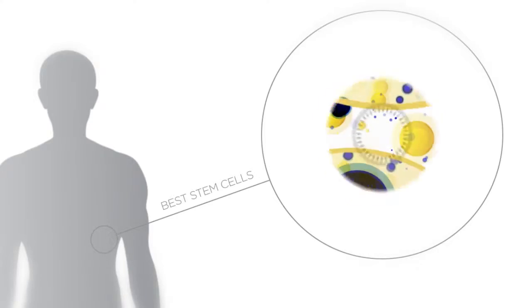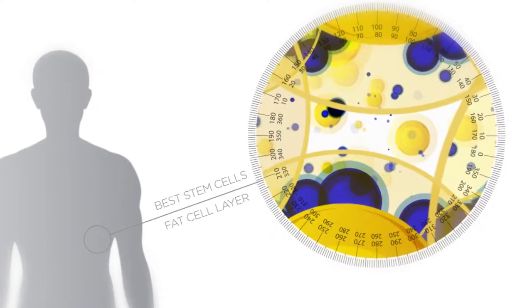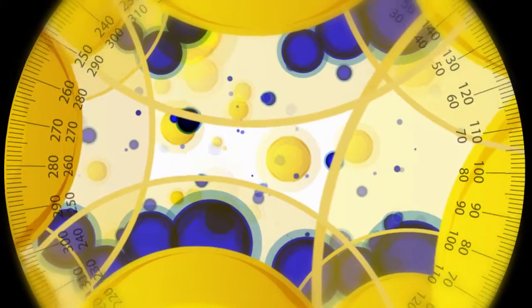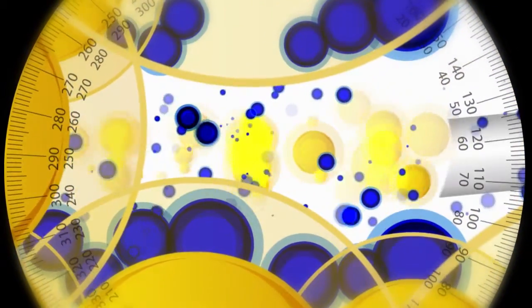The process begins with the search for the best stem cells in the human body. The stem cells are found within the body's fat layer. By using a sterile and specialized syringe, doctors extract a mixture of fatty tissue and a group of healthy stem cells.